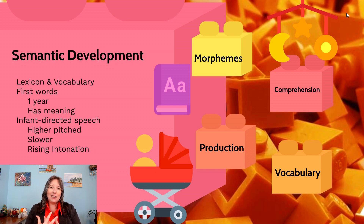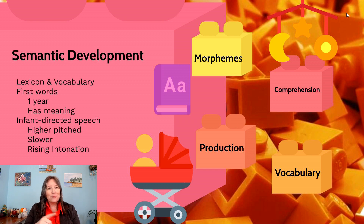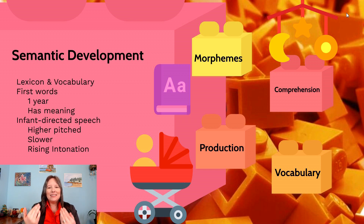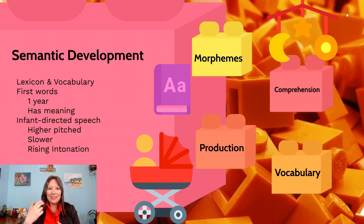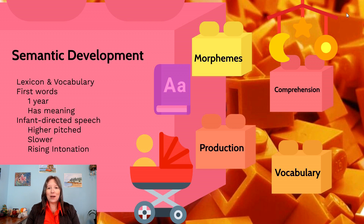We tend to use the term infant directed speech because it's about the audience, not the speaker. When we speak to a baby, we speak with a higher pitch tone, a little bit slower, and with rising intonation. So instead of saying to an adult 'oh look at that dog,' you'd say to a baby 'look at that dog' — slowed down and higher. This helps with word segregation, emphasizes phonemes, and usually includes pointing, helping them map meaning and add words to their lexicon.